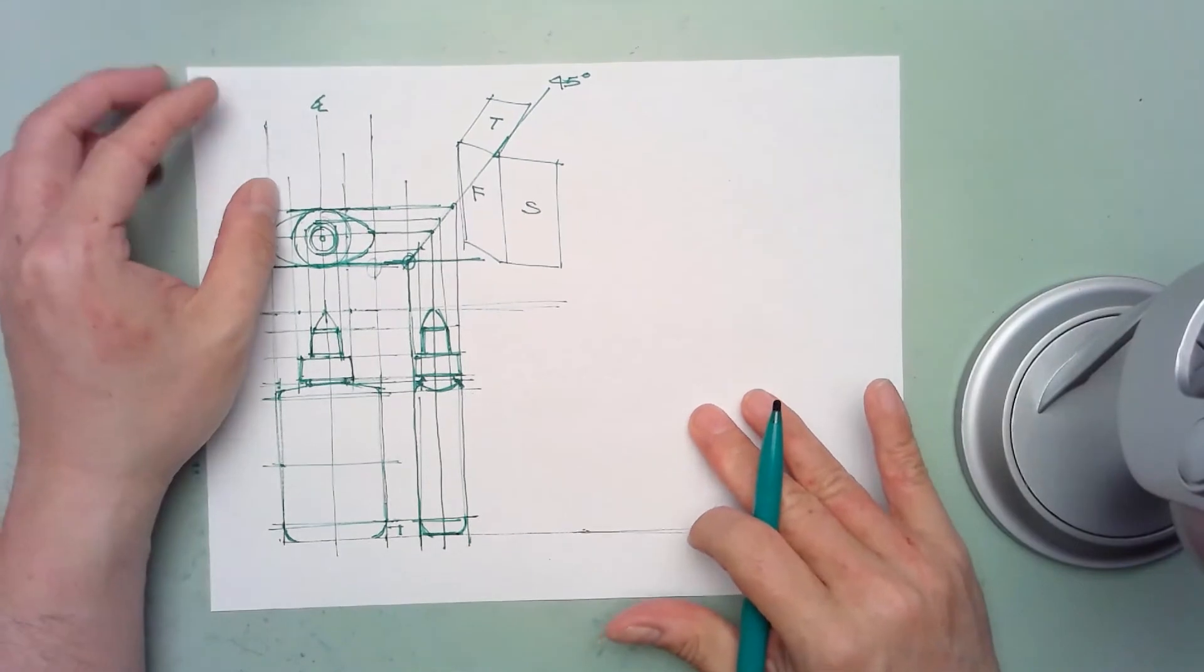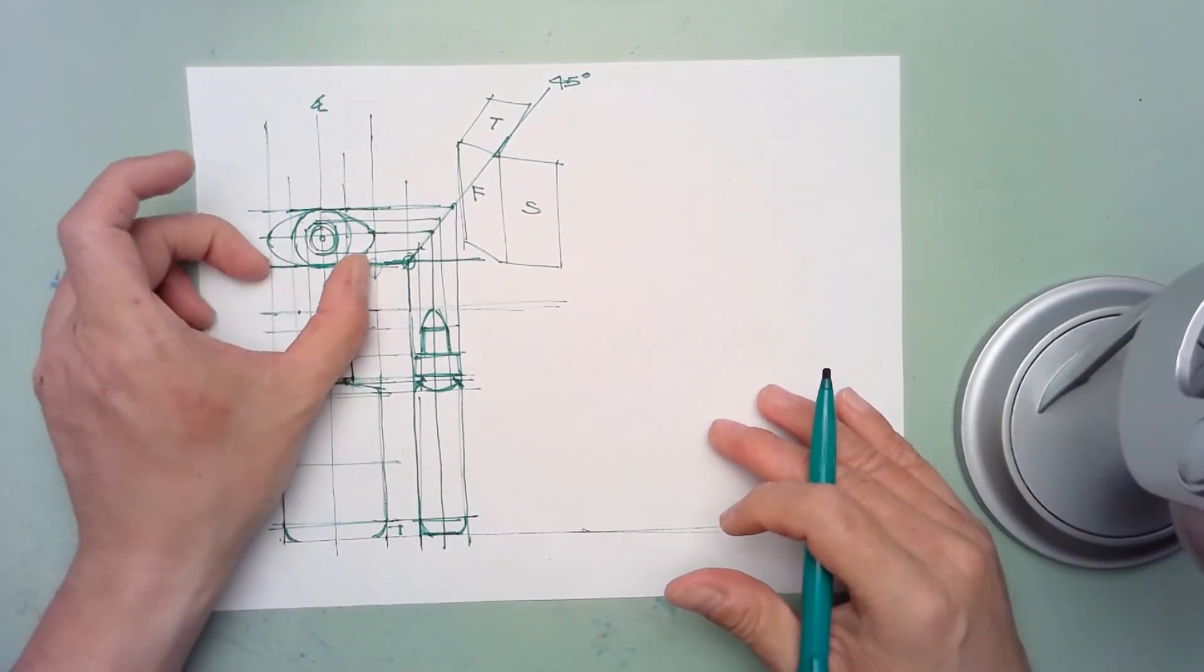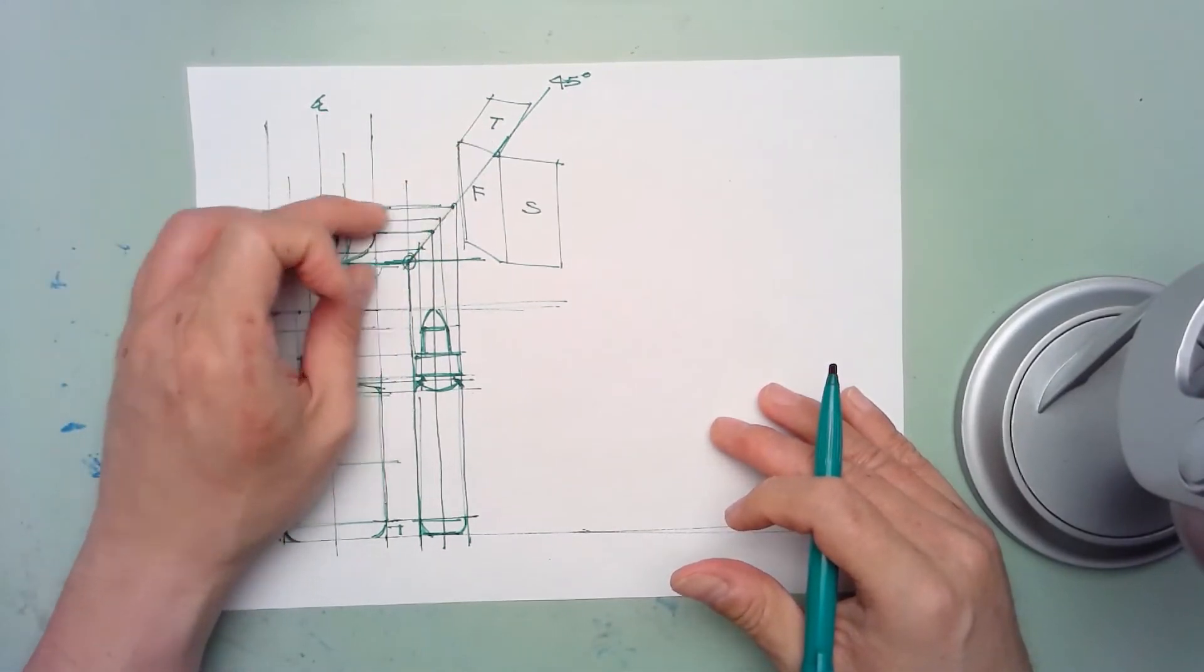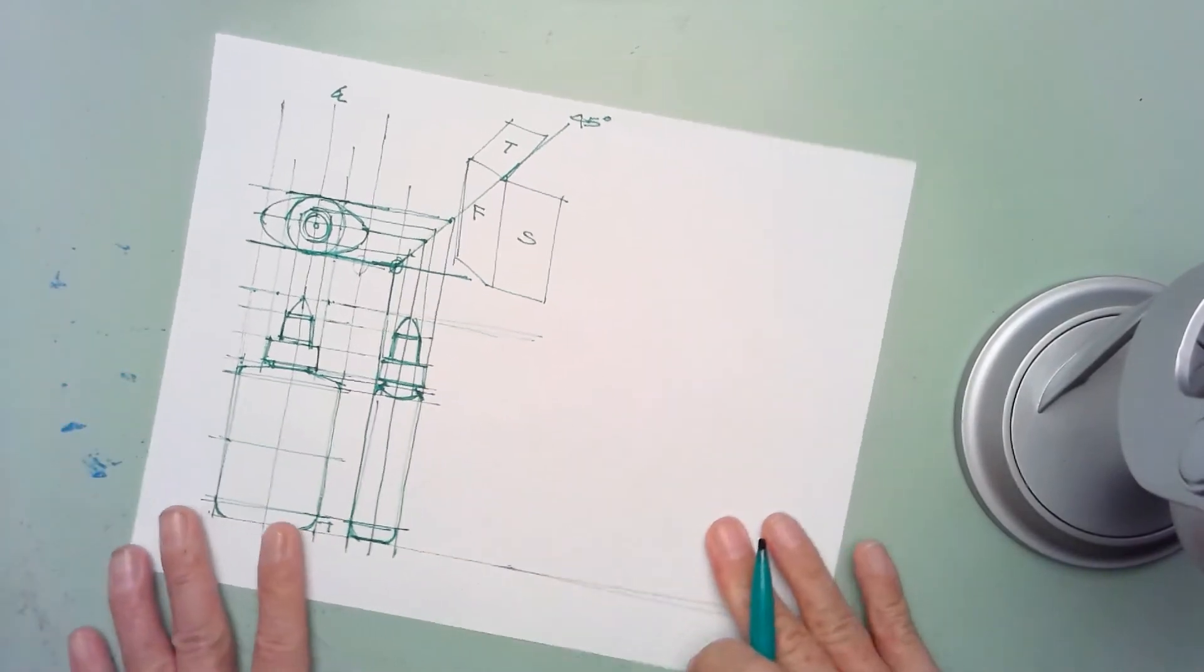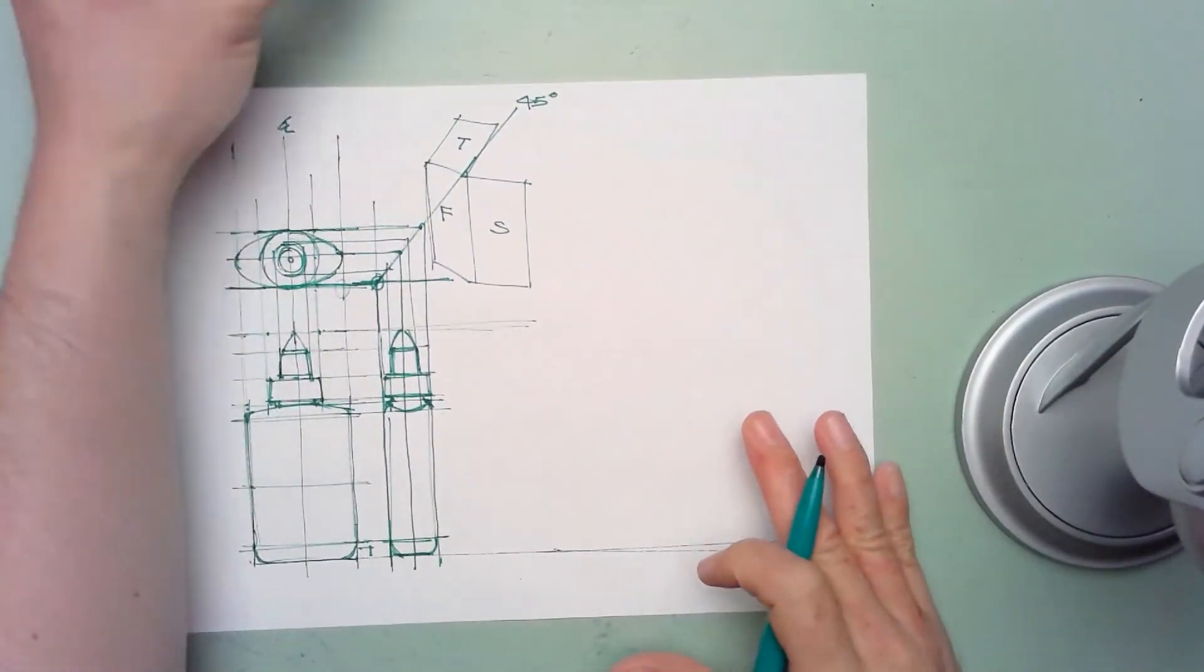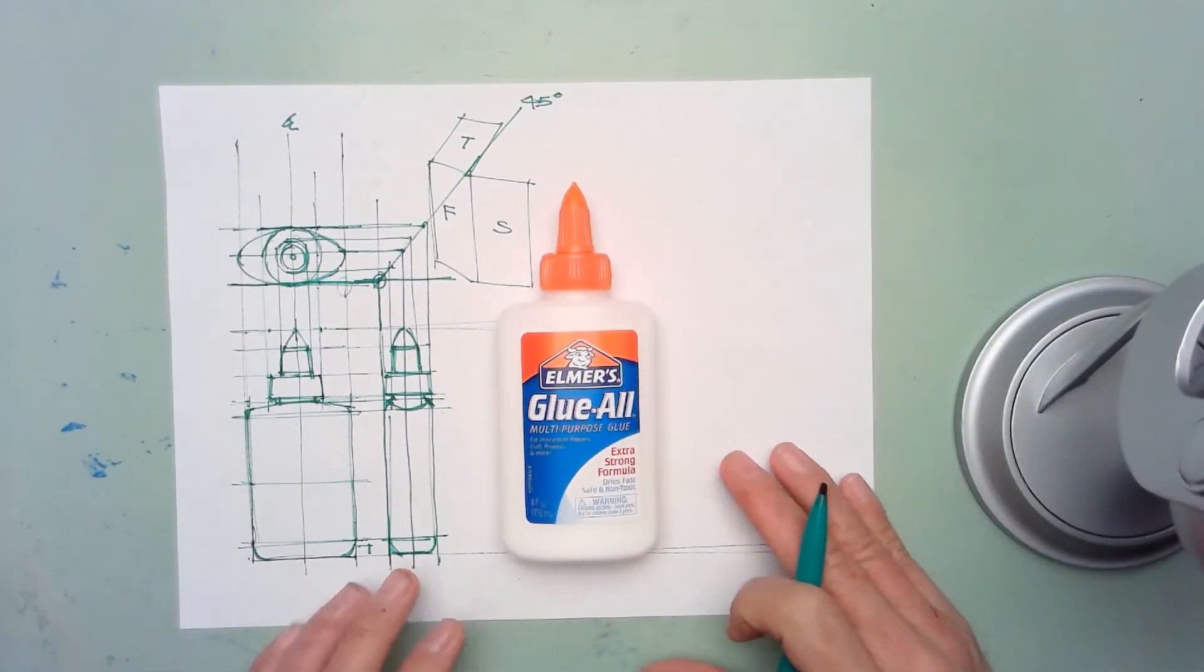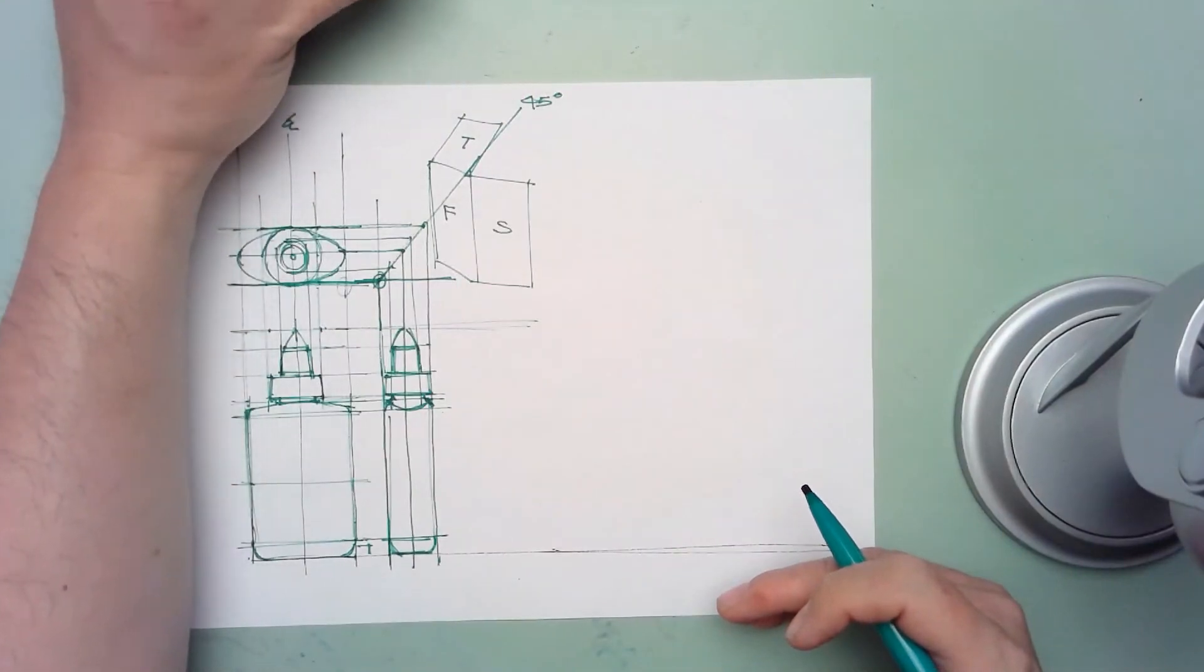So basically what we've done now is essentially use the front view to generate the top view, and then use the top view via the 45-degree transfer line to generate your side view along with the front view. So now we have a complete set of three-view drawing for this particular glue bottle. So I think we pretty much hit this proportion pretty well.